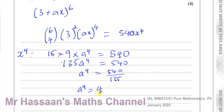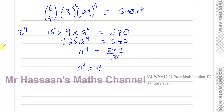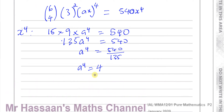So a^4 = 4. To find a we take the fourth root of 4. Whenever you take an even root, the answer can be positive or negative, so a = ±(fourth root of 4).